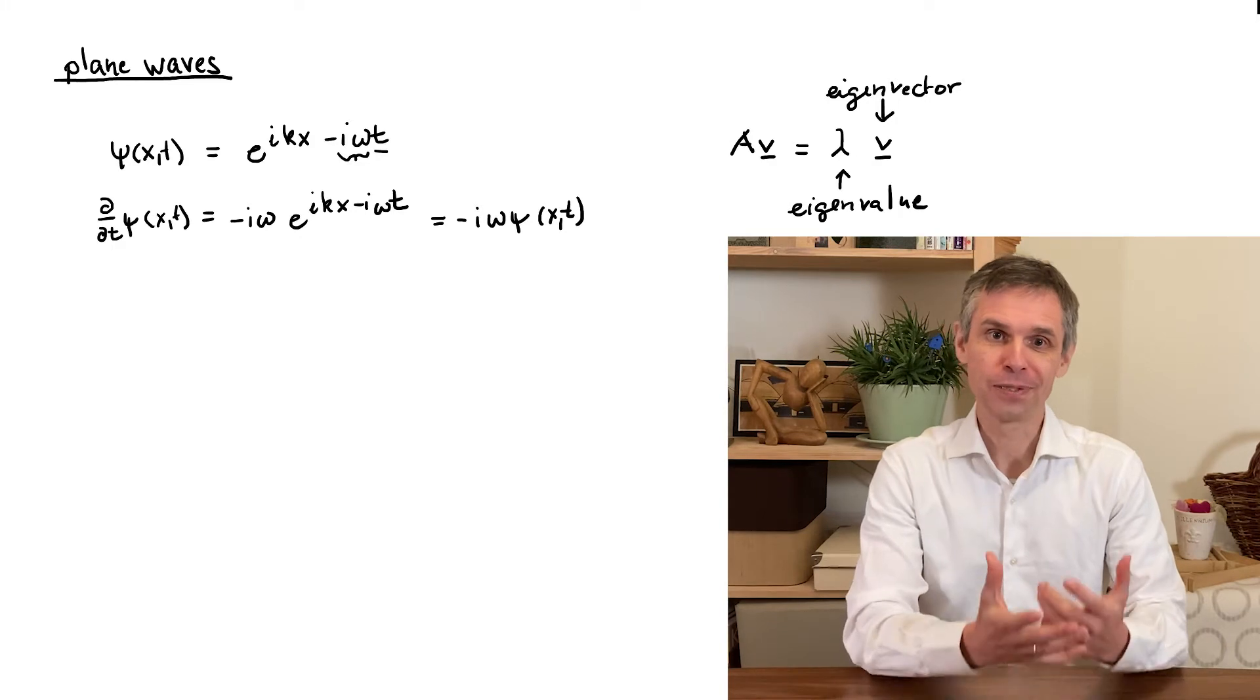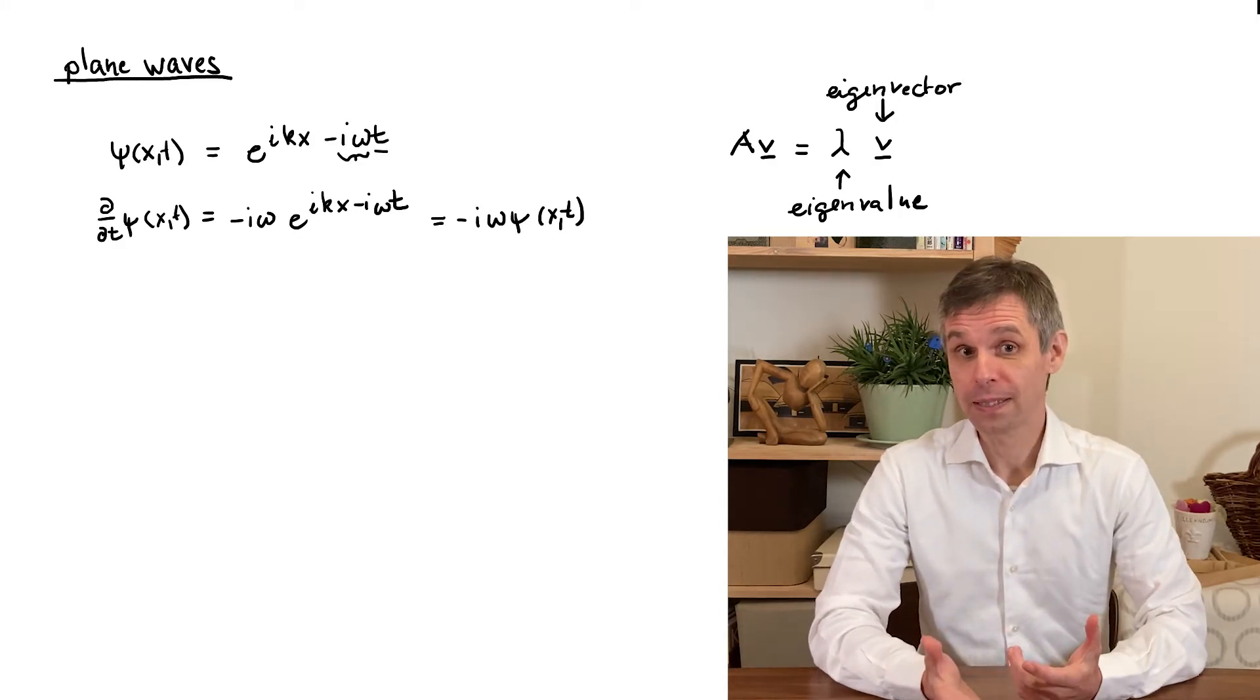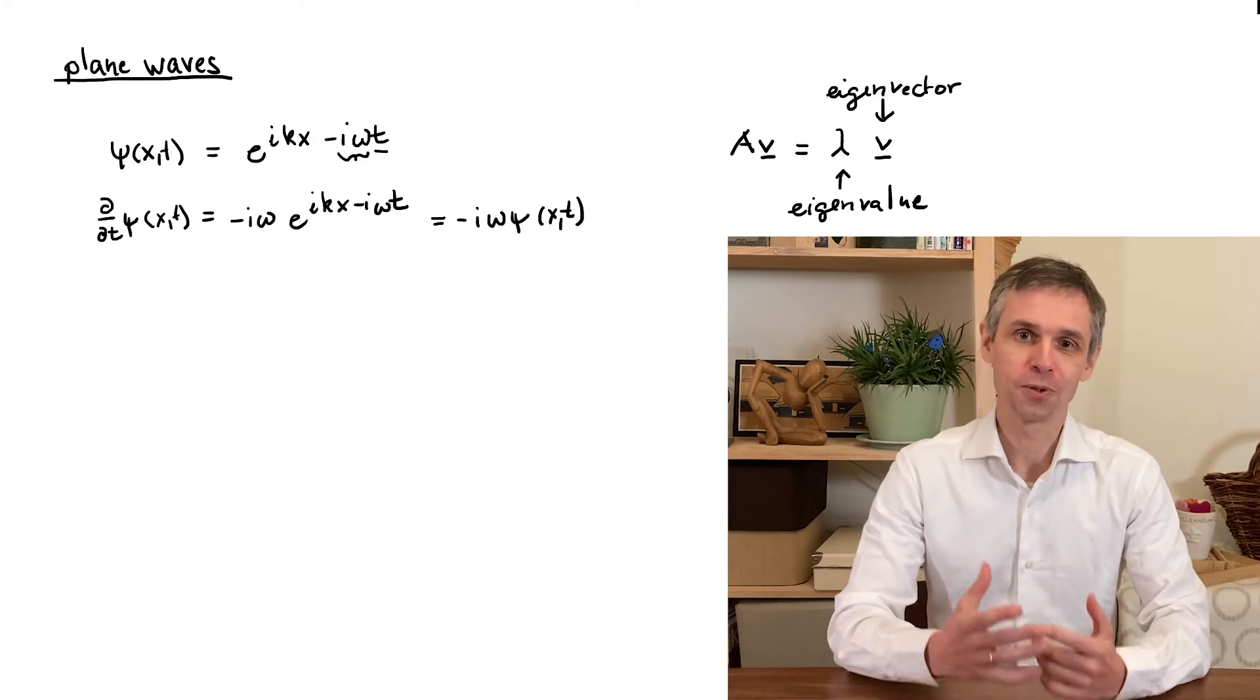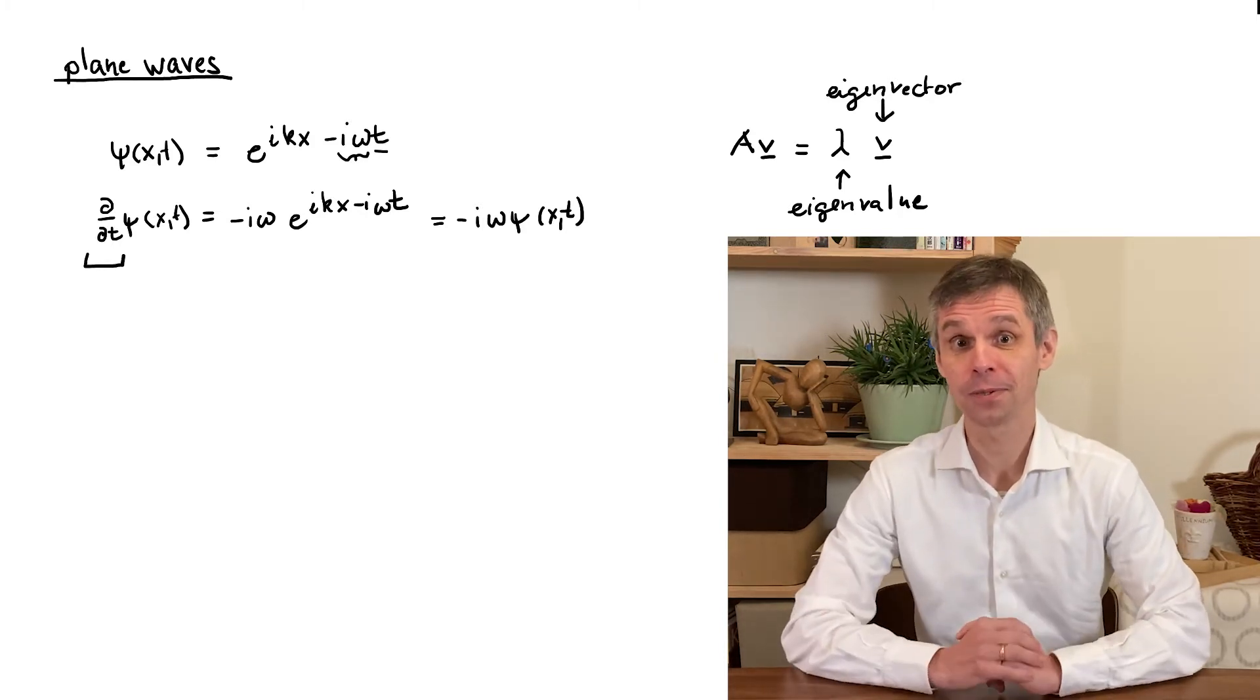Now let's have a look what we have obtained here. Instead of multiplying a vector by a matrix we took a function and then took its derivative which is a mathematical operation.